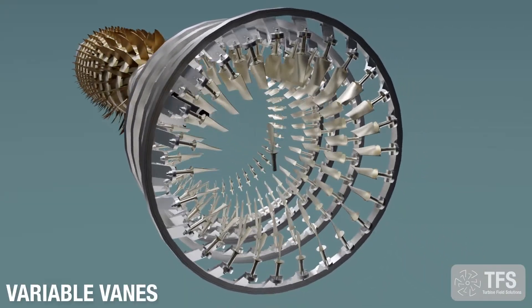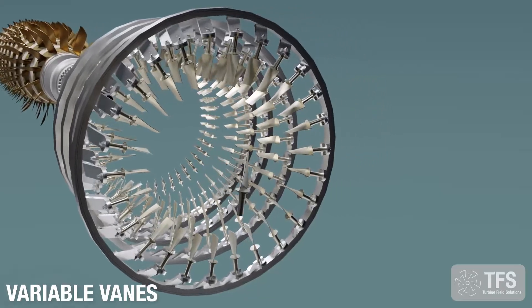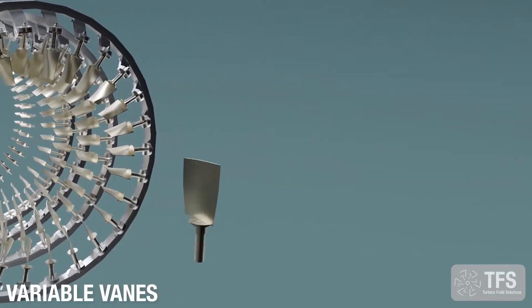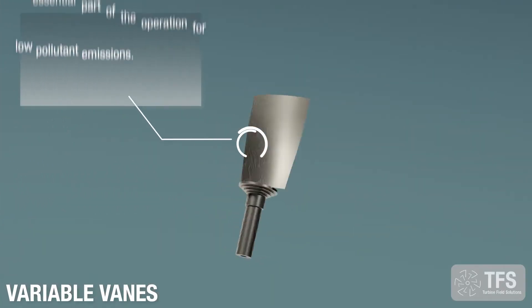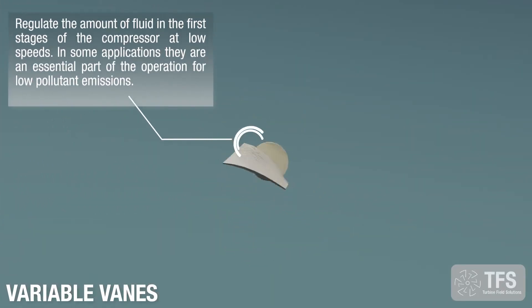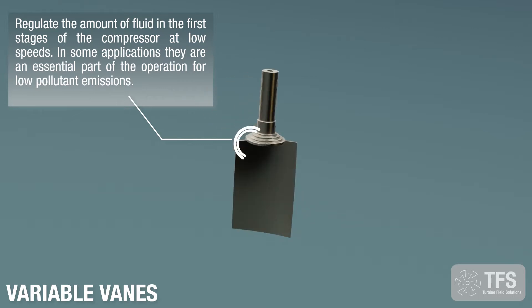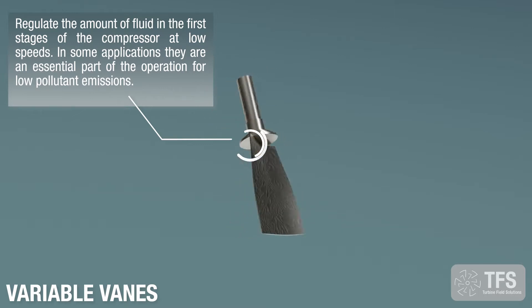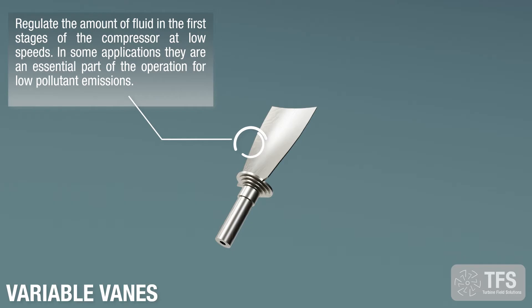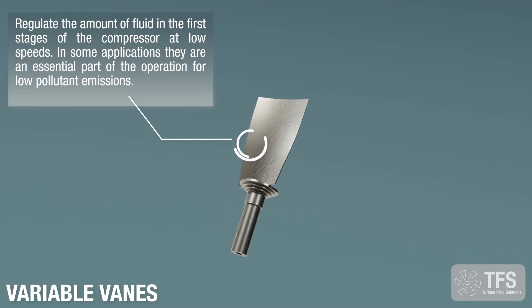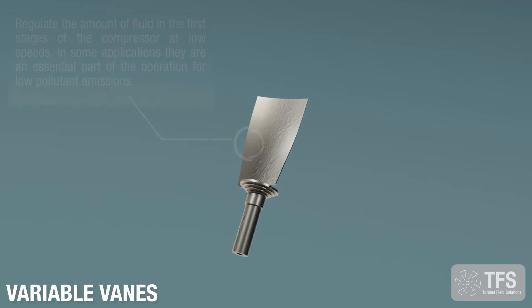Variable vanes. Regulate the amount of fluid in the first stages of the compressor at low speeds. In some applications, they are an essential part of the operation for low pollutant emissions.